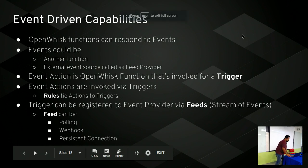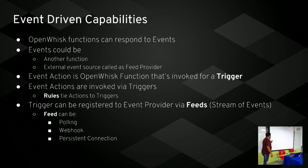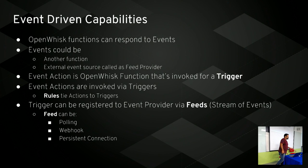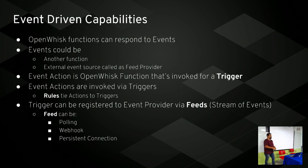OpenWhisk also has event-driven capabilities. Someone invokes an event which becomes a trigger that causes an action. Events can come from other functions, external event feeds like GitHub or Slack, or custom providers. At Red Hat, we wrote a provider for Infinispan Cache - when any entry is put into the cache, the Infinispan listener fires an event which triggers an action.